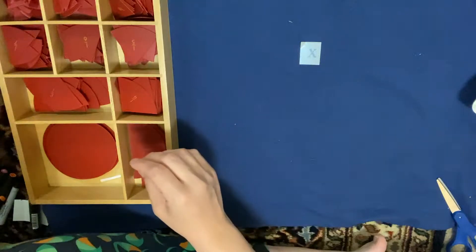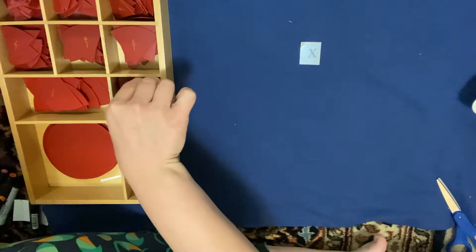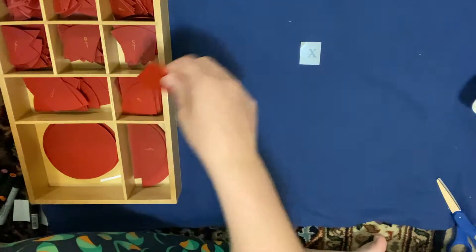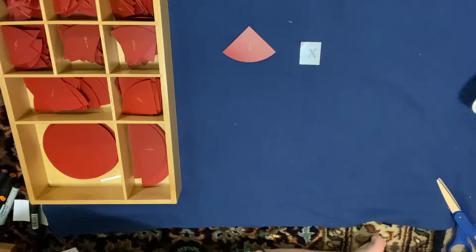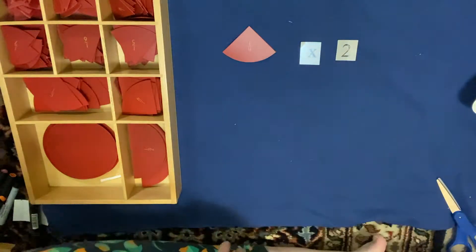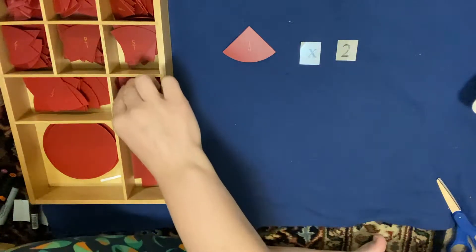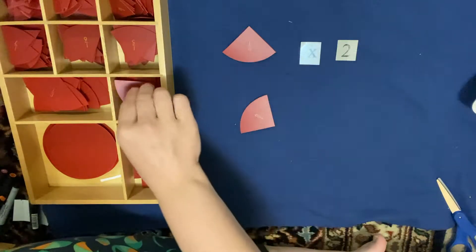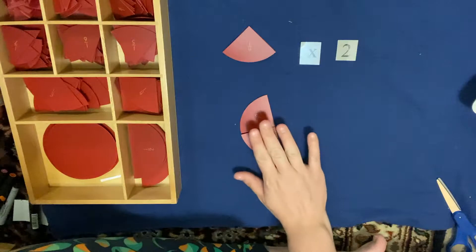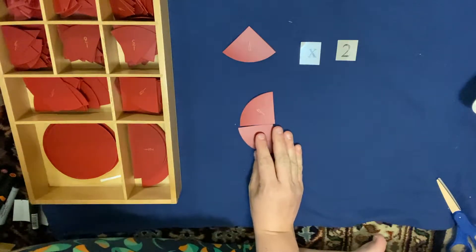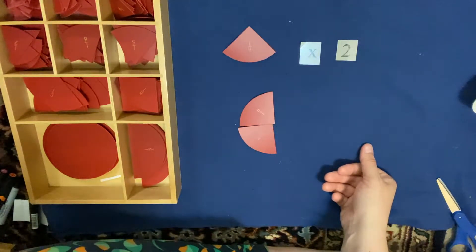So I'm going to take 1/4 times 2. So here's 1/4 one time, here's 1/4 two times. How many fourths do I have? Two. Yeah, that's right. It equals 2/4.